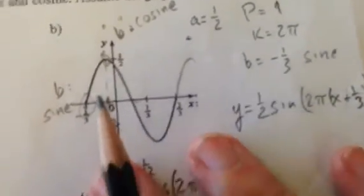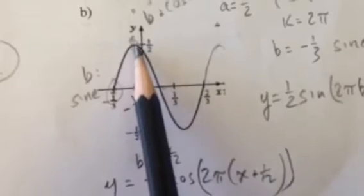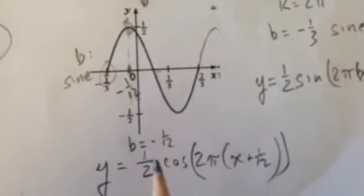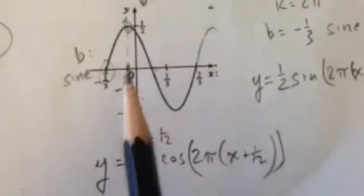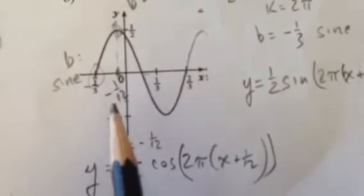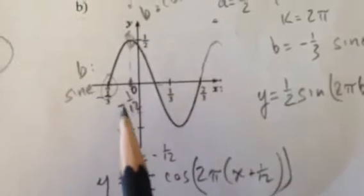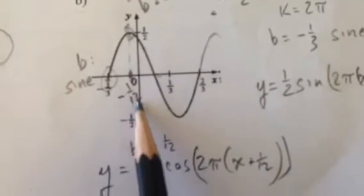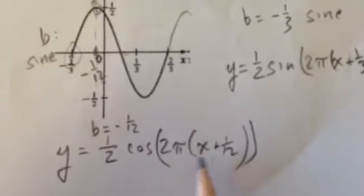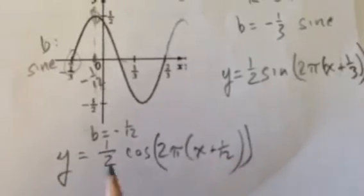The cosine equation will use the x coordinate of that point, which is a little bit tricky. And just to spare us a little bit of time, I figured out that that is negative 1/12. The period is 1, so all I did was take 1/4 of 1, which is 1/4, and add it to negative 1/3. So negative 1/3 plus 1/4 gives me negative 1/12. That's my locator or my beginning of one cycle for cosine. But everything else, amplitude, k, and everything stayed the same. So there's my cosine equation.